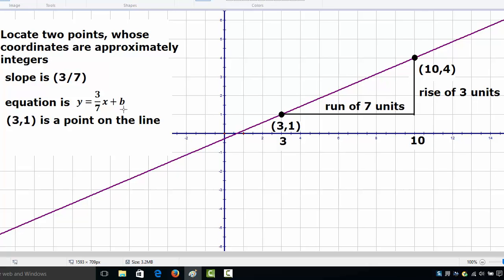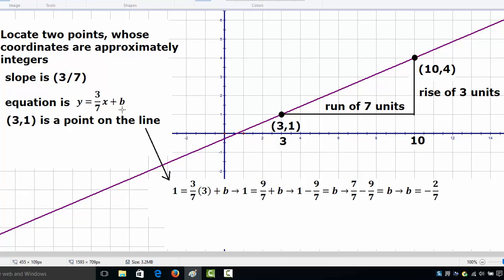Now to determine b, note that (3,1) is a point on the line. So we can substitute x equals 3 and y equals 1 in this equation and get 1 equals 3 over 7 times 3 plus b, which means 1 equals 9 over 7 plus b.